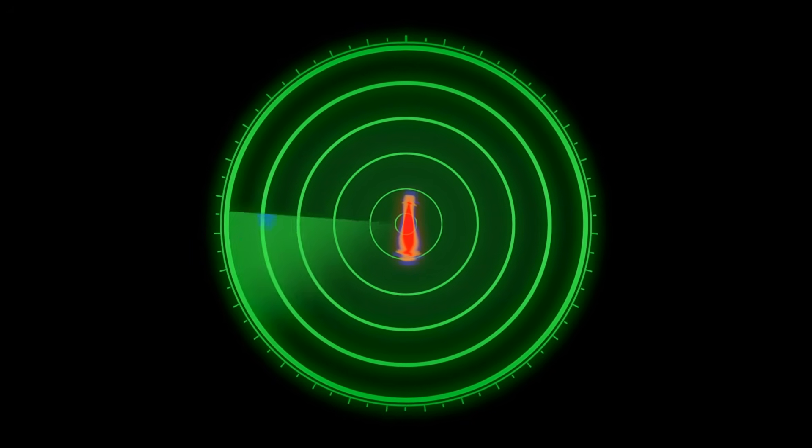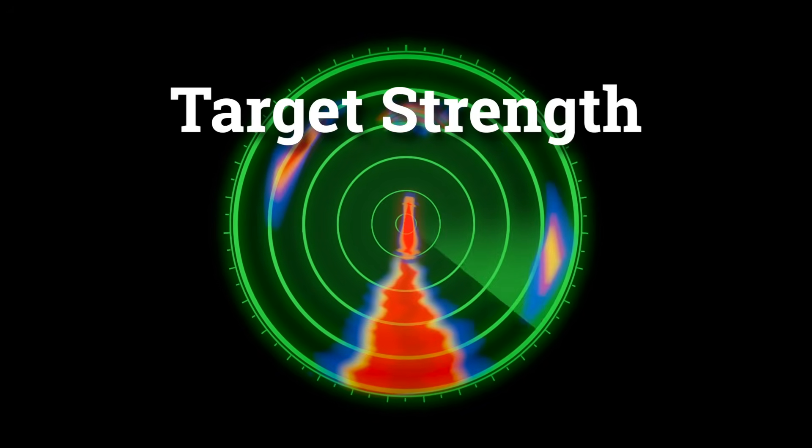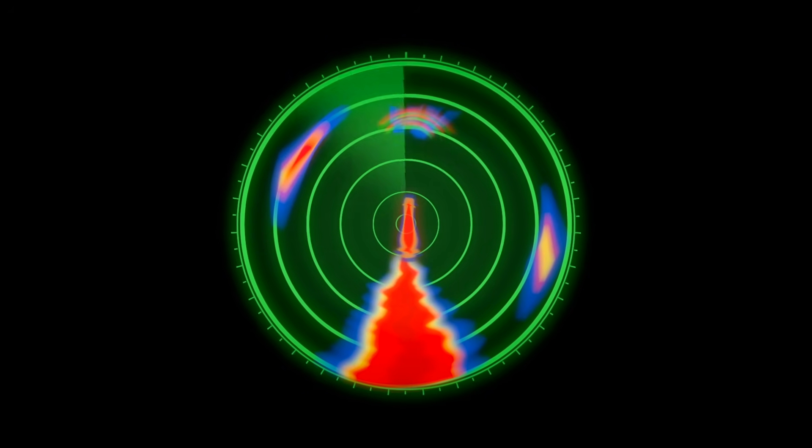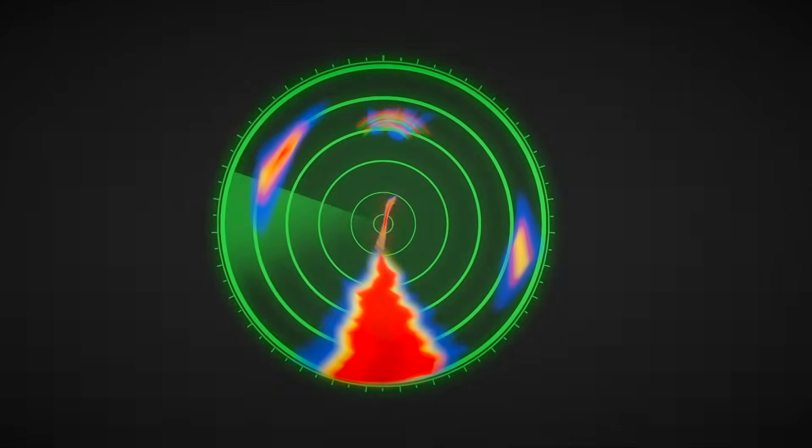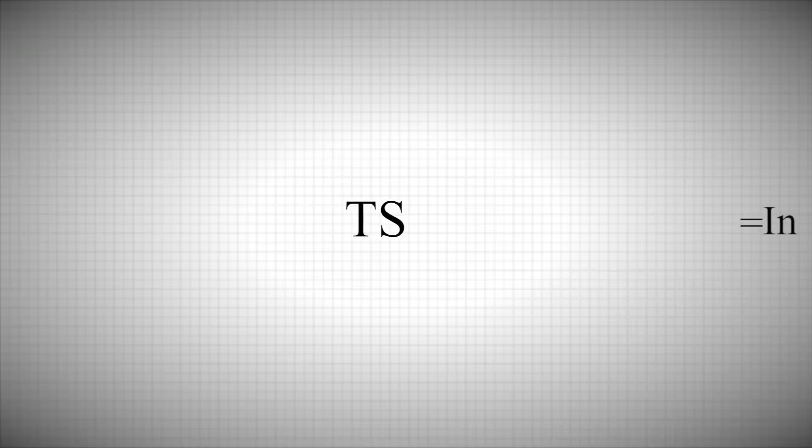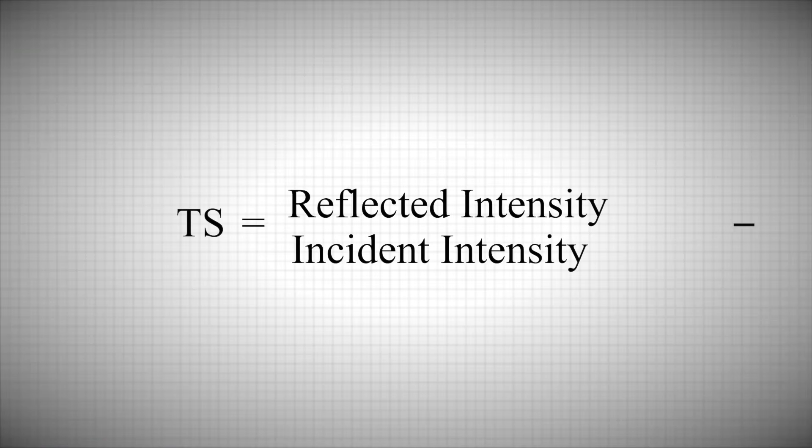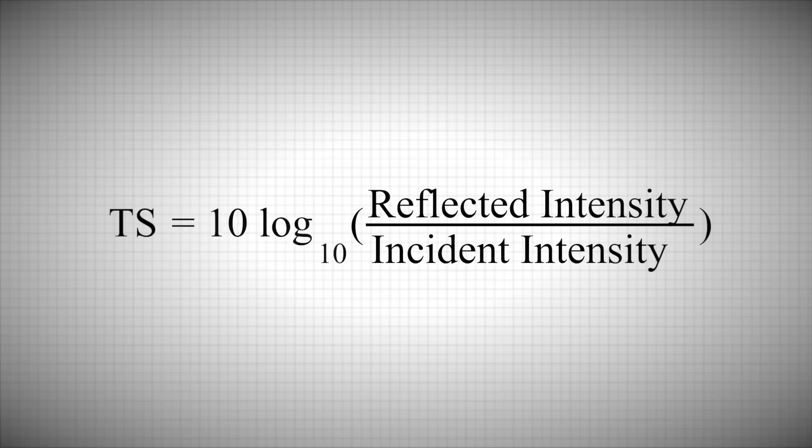But the system can also give them shape by measuring the target strength. For this, you need to divide how intense the sound beam was when it reflected off the object, its incident intensity, by how much of that bounced back, its reflected intensity, and then multiply that by 10 log 10, for reasons we won't get into right now.